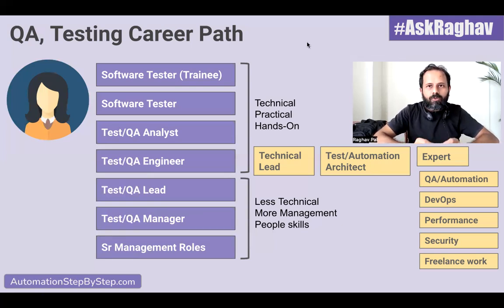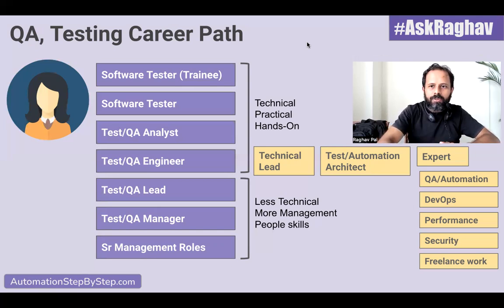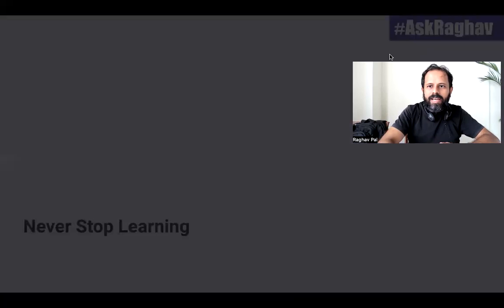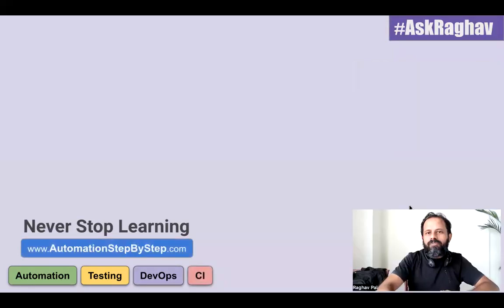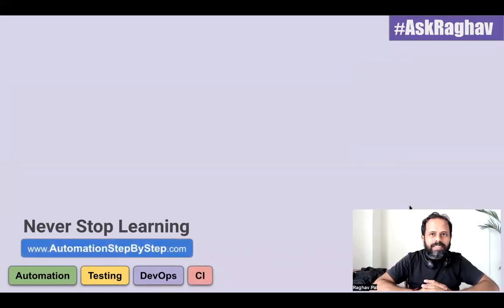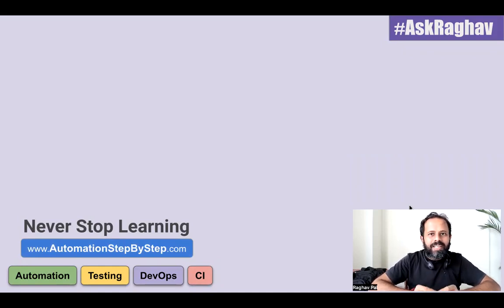So you can decide which path you want to grow into in the testing and QA process. This is the complete career path. If you want, you can take a screenshot of this screen and keep it handy. If you have any more questions for the next episode of Ask Raghav, let me know in the comment section below. Thank you for watching, and never stop learning.